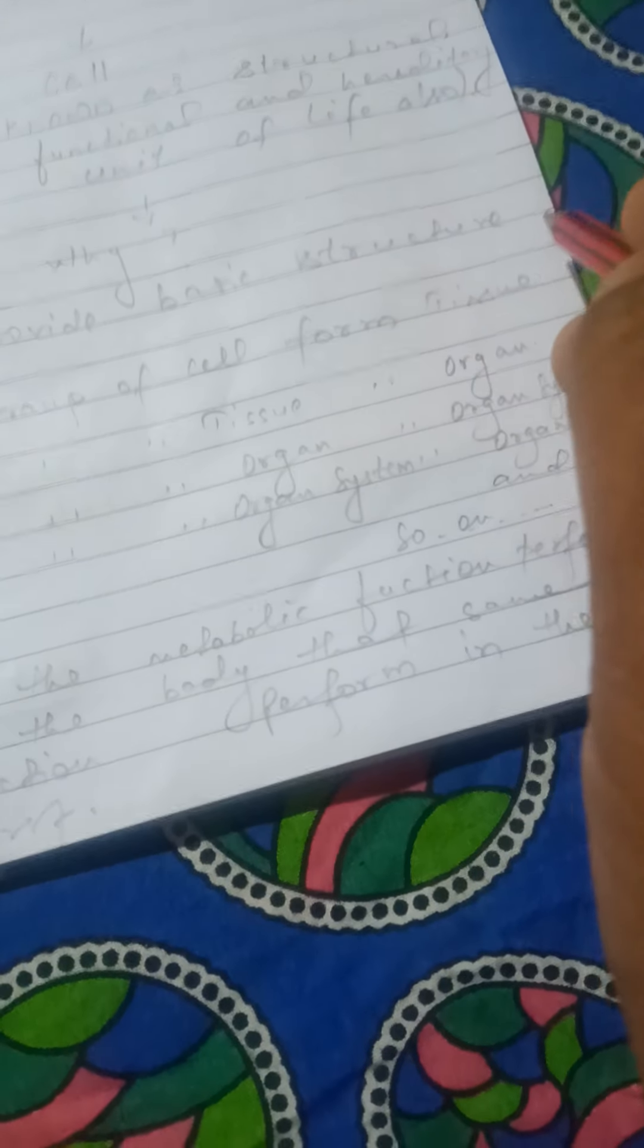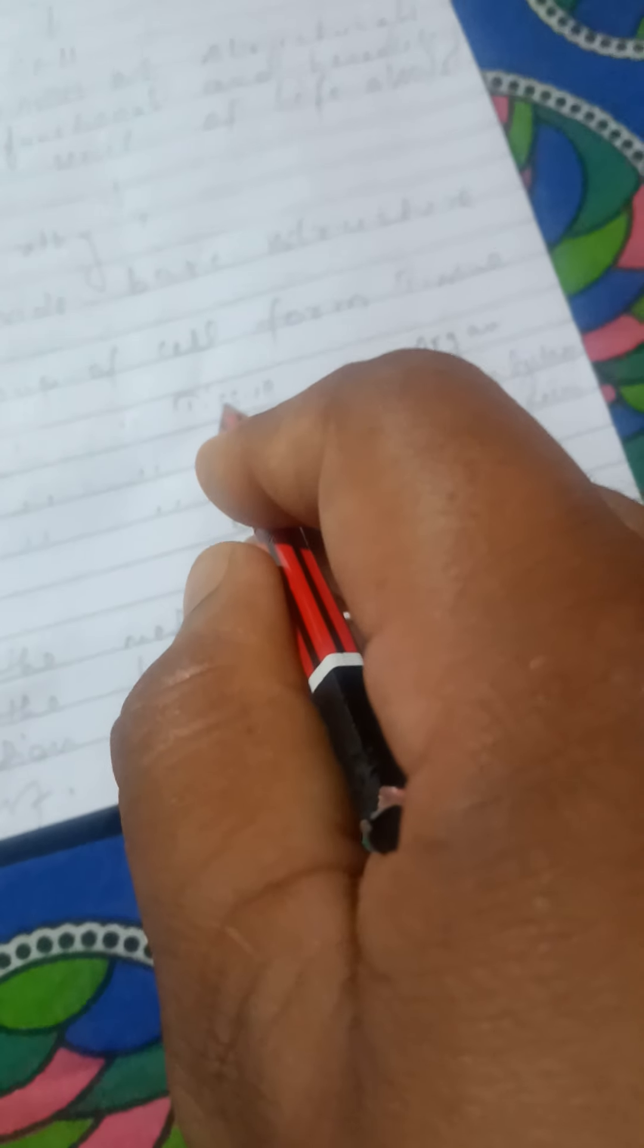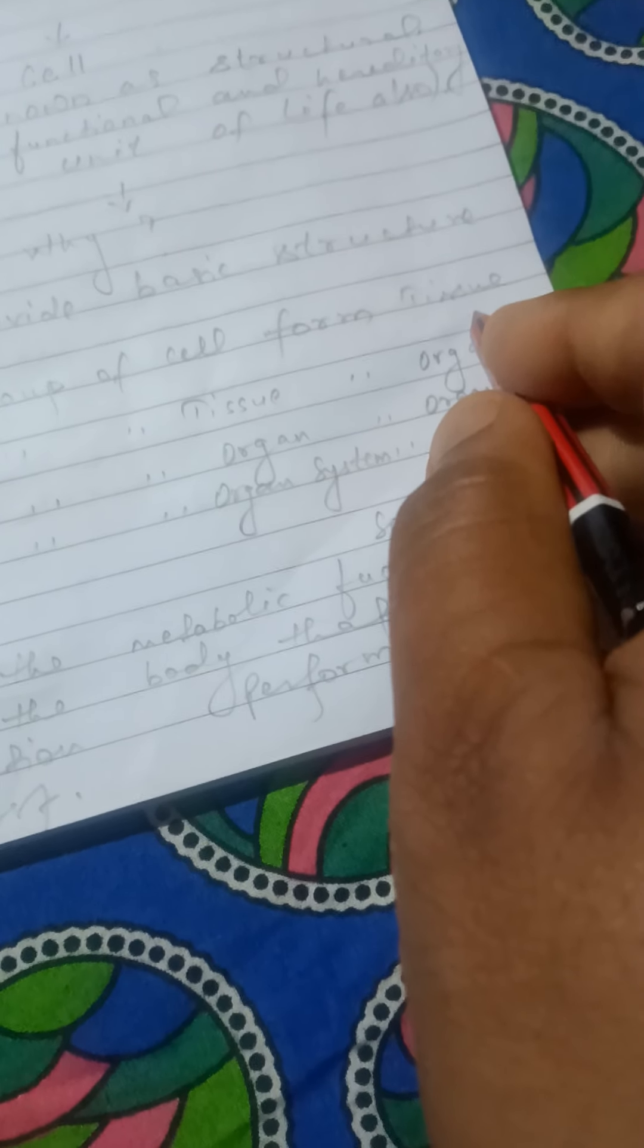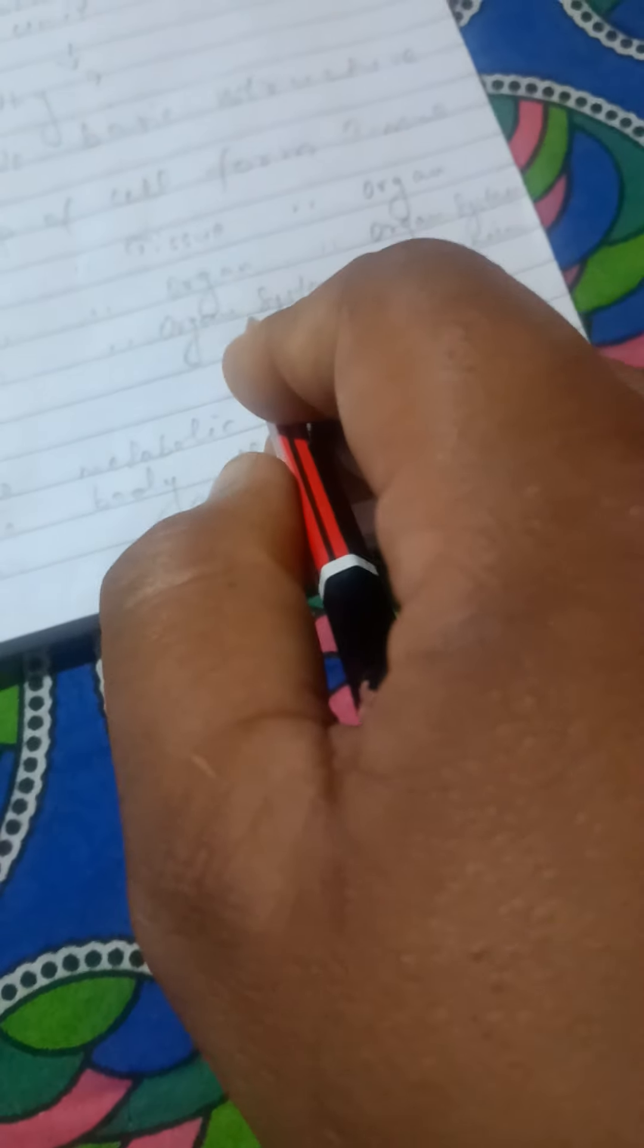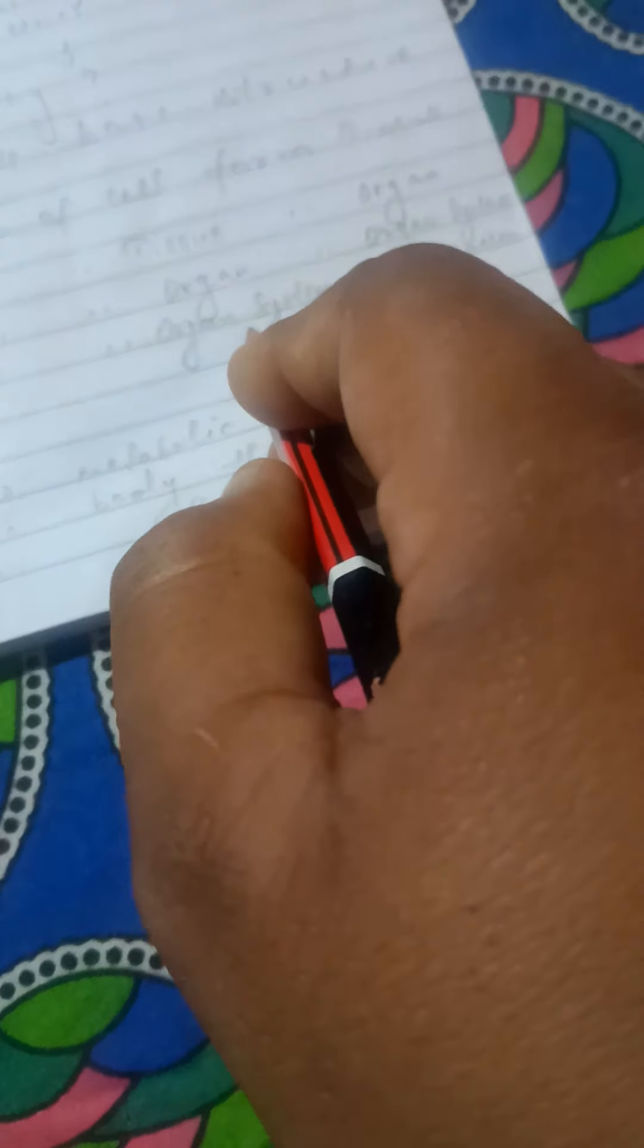Now, the explanation is like this: if we call the cell a structural unit of life, then we focus on the basic structure of life, which is the cell. A group of cells form tissue, a group of tissues form an organ, a group of organs form an organ system, and a group of organ systems form a complete organism. This sequence...